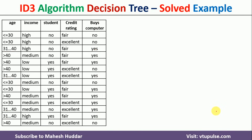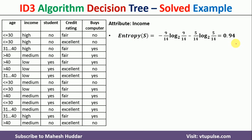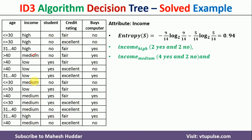Now we consider the second attribute, income. The entropy of the whole dataset remains 0.94. The possible values for income are high, medium, and low. For high income, there are 4 examples — 2 yes and 2 no. For medium income, there are 6 examples — 4 yes and 2 no. For low income, there are 4 examples — 3 yes and 1 no.